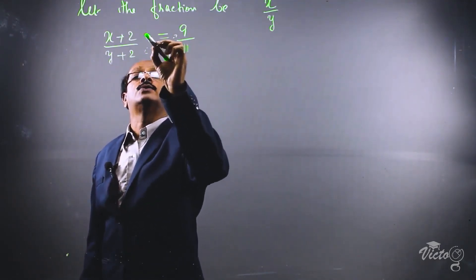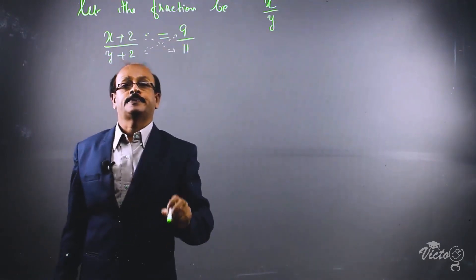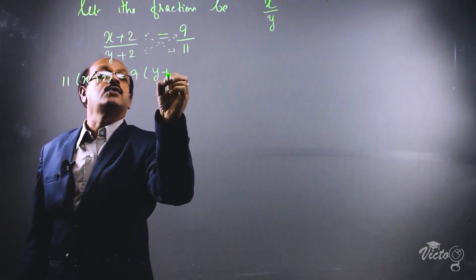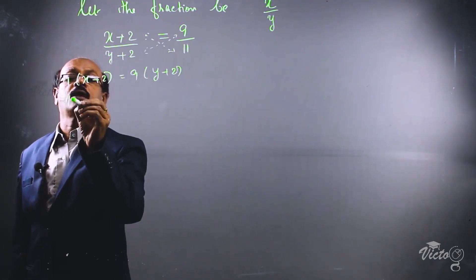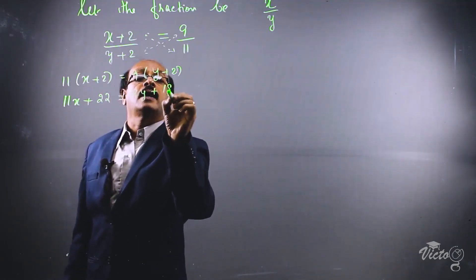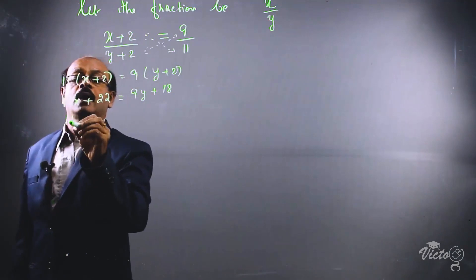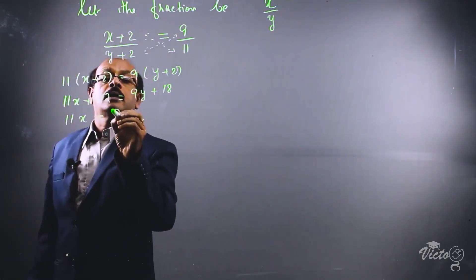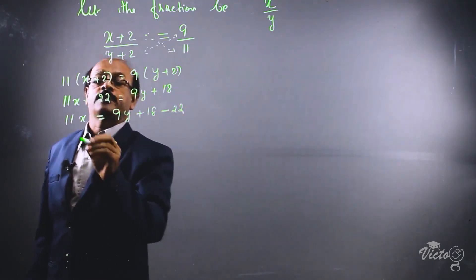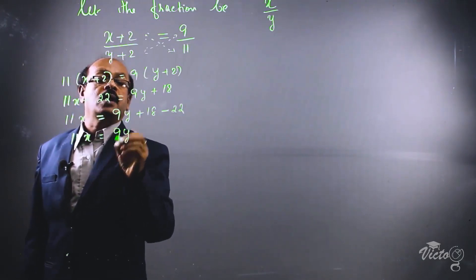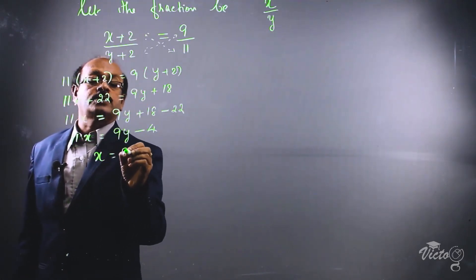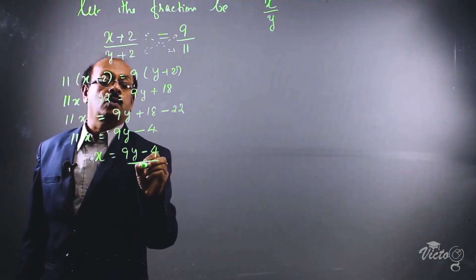Cross multiplying: 11 into (x + 2) is equal to 9 into (y + 2). That gives 11x + 22 = 9y + 18. Moving 22 to the other side: 11x = 9y + 18 − 22, which is 9y − 4. Therefore x = (9y − 4) divided by 11.